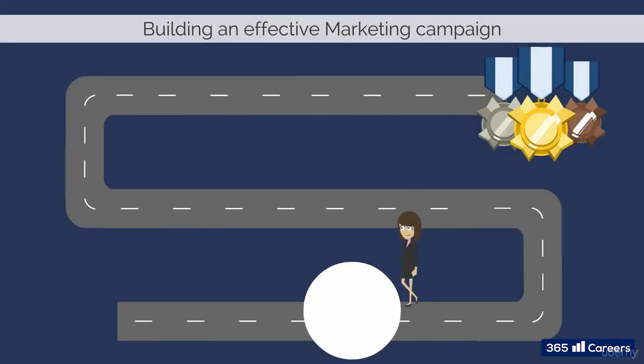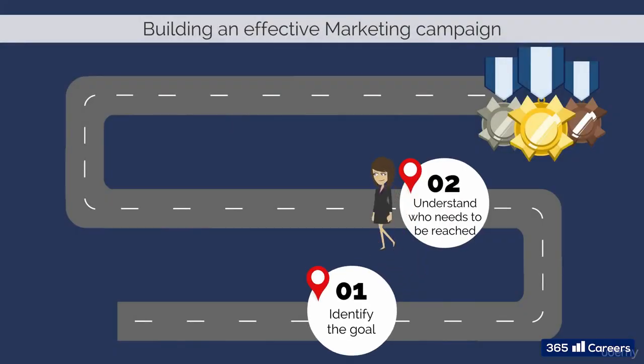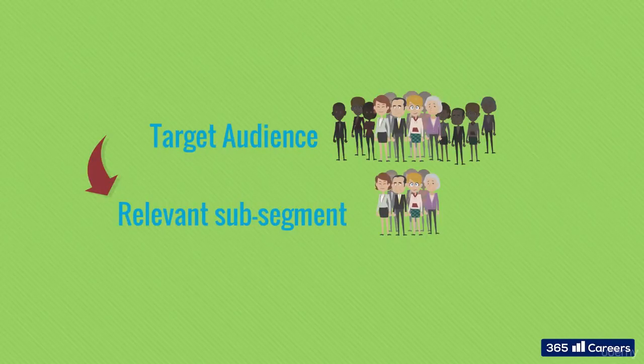The second step consists of gaining an idea about the type of people we want to reach. These are the exact same people we had in mind when creating the product — the target audience. If the target audience is made of multiple sub-segments, then marketing managers must decide which one they would like to address.